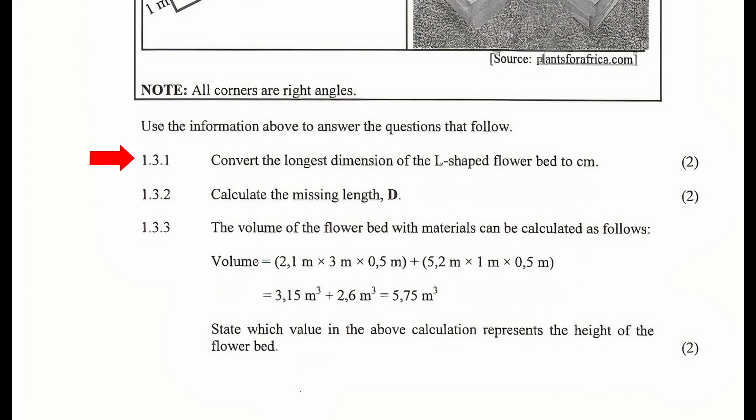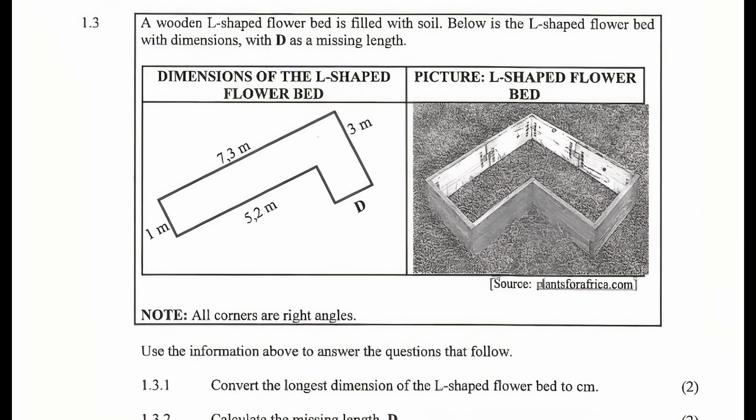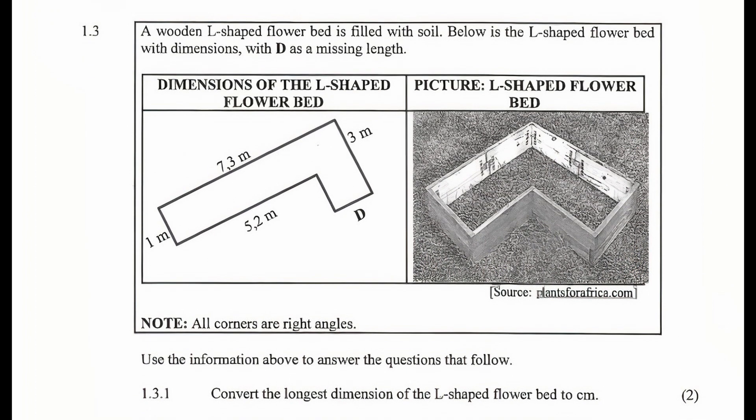1.3.1: Convert the longest dimension of the L-shaped flower bed to centimeters. From the table, the longest dimension is given as 7.3 meters. We should know that there is 100 centimeters in 1 meter. So 7.3 meters is equal to 7.3 multiplied by 100 centimeters and this gives us a length of 730 centimeters.